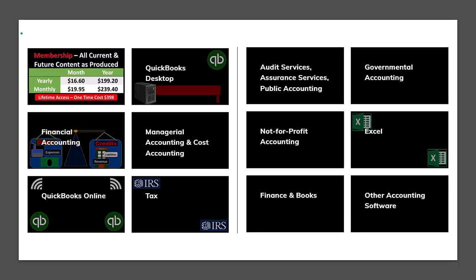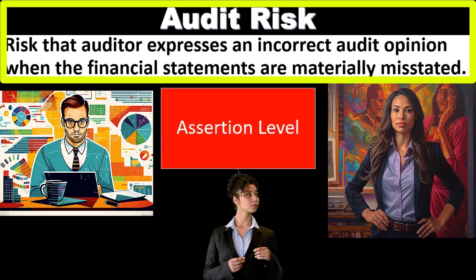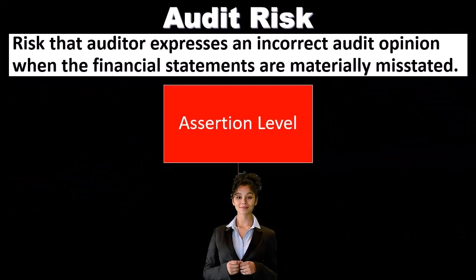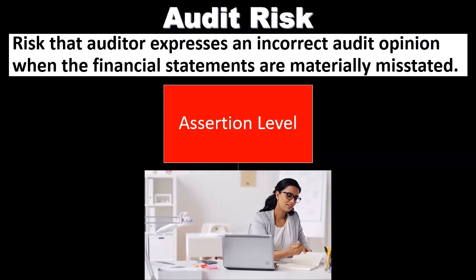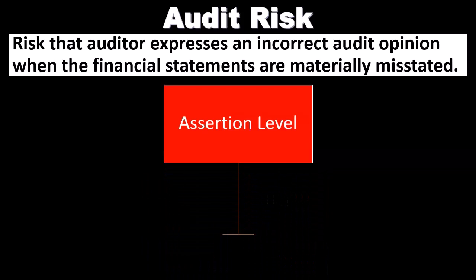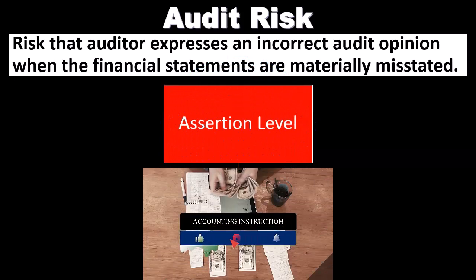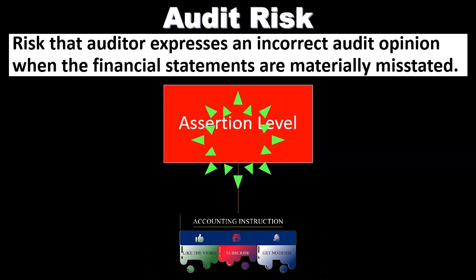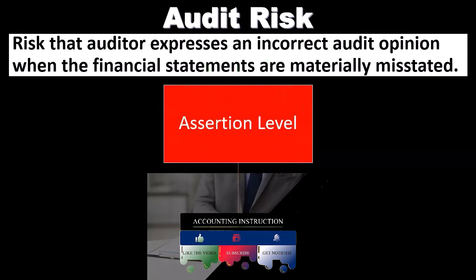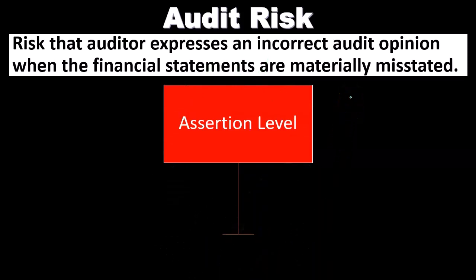Audit risk is the risk that the auditor expresses an incorrect audit opinion when the financial statements are materially misstated. For example, if we were to give the most common type of opinion — a clean opinion, an unqualified opinion — expressing that the financial statements are put together in accordance with generally accepted accounting principles, and there was a material misstatement from that standard, then our opinion would be wrong.